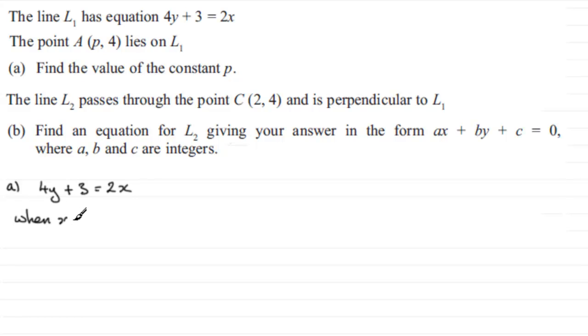We can say that when x equals P, y equals 4 and just substitute those values into our equation here. So we've got 4y that's going to be 4 times 4 which is 16 plus 3 equals 2x, x being P though so that's 2P. So we've got 16 and 3 which is 19 which equals 2P and if we divide both sides by 2 you end up with P equaling 19 over 2.